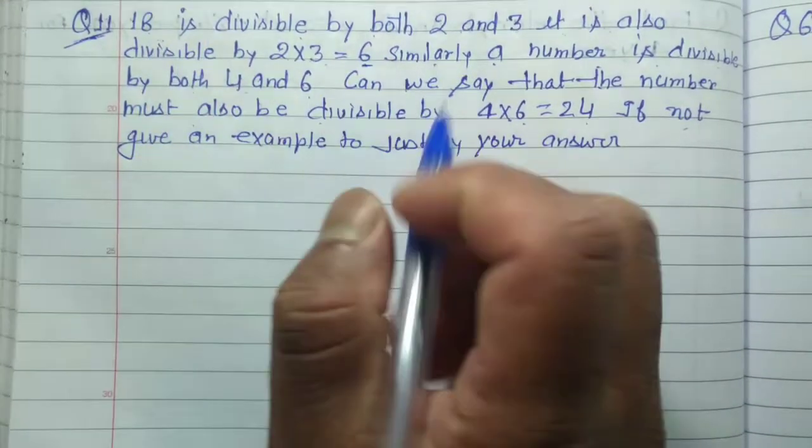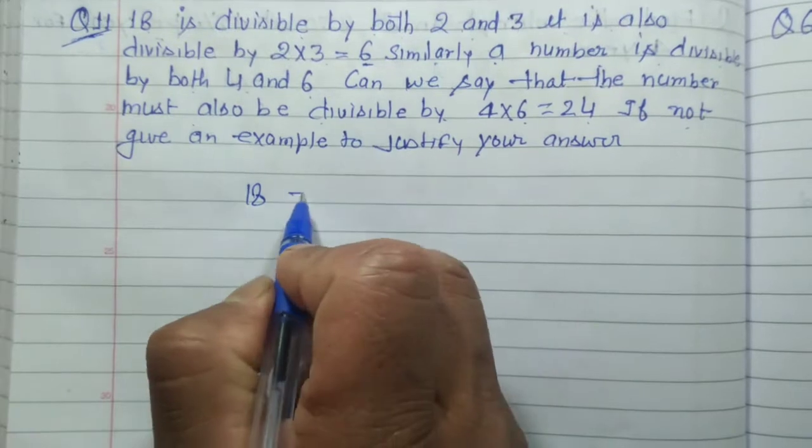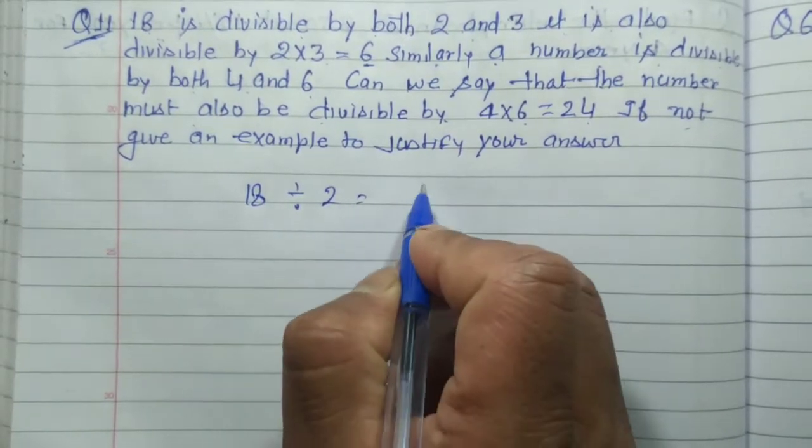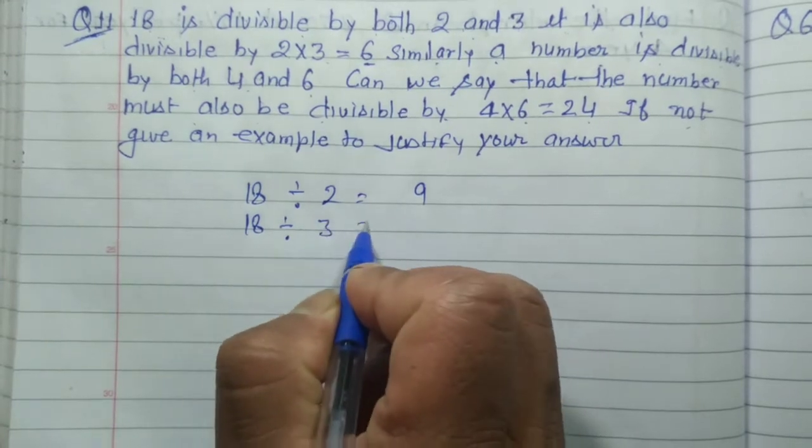First, part 1 is 18. See, we have 18. 18 is divisible by 2 and 3. Divide by 2, then we get 9. If you divide by 2, then 9. If you divide by 3, then we get 6.